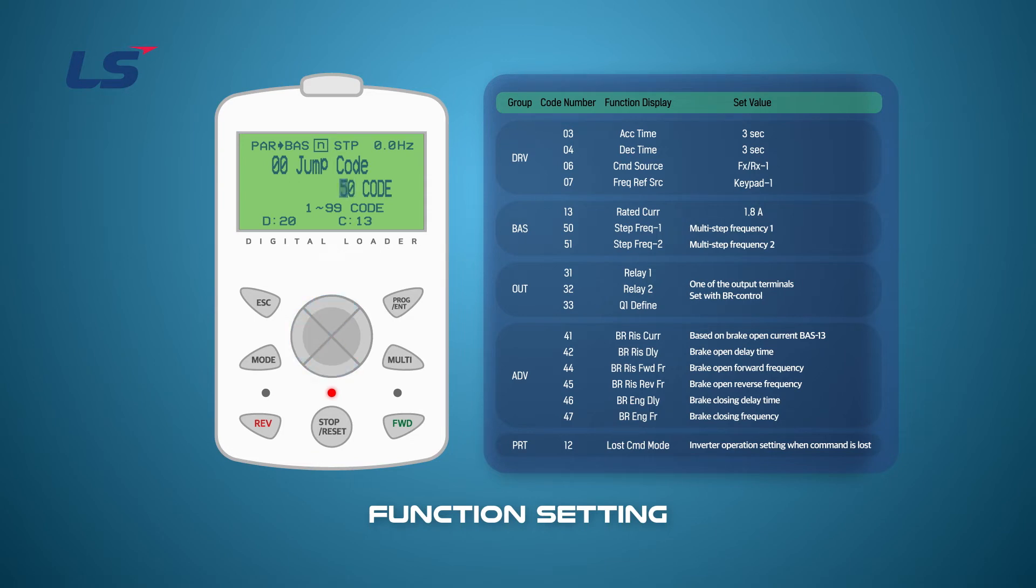Next, input the frequency for multi-step speed operation. First gear is set to 5 Hz. Second gear is set to 15 Hz.